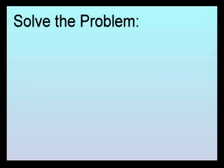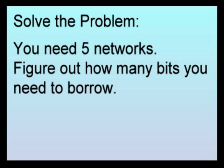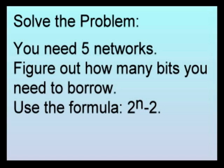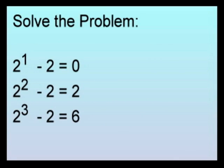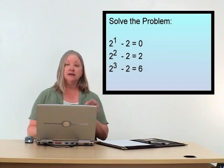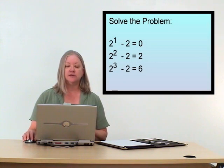How does this work? We need five networks, so we need to figure out how many bits to borrow. Using the formula 2 to the n minus 2: borrow one bit — 2 to the 1 is 2, minus 2 gives us 0. Try two bits — 2 to the 2 is 4, minus 2 gives us 2. That's only 2 networks, still not enough. Try three bits — 2 to the 3 is 8, minus 2 gives us 6. That's perfect — we needed five networks. So we need to borrow three bits from the host side of the address.